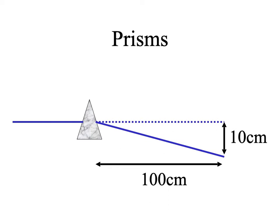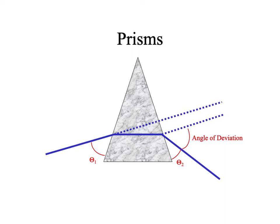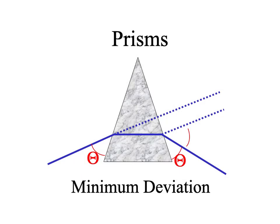Prisms have units — prism diopters — which are not the same as diopters. Prism diopters are the number of centimeters of drop over 1 meter. A prism that induces a 10-centimeter deviation over 1 meter is a 10 prism diopter prism. We're interested in the net change between the ray of light coming in and the ray coming out — we call that the angle of deviation. There is an orientation for a prism called the angle of minimum deviation, achieved when the incident and exiting rays have the same theta.